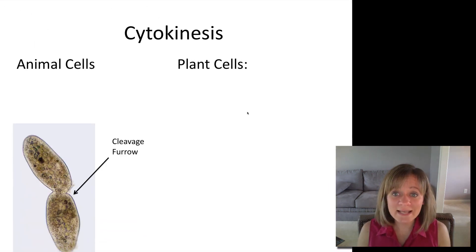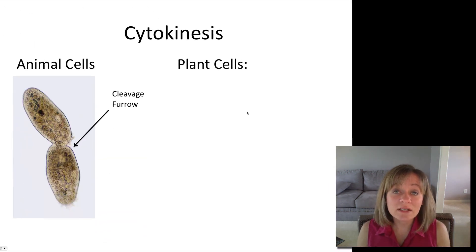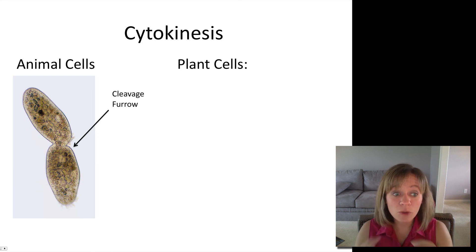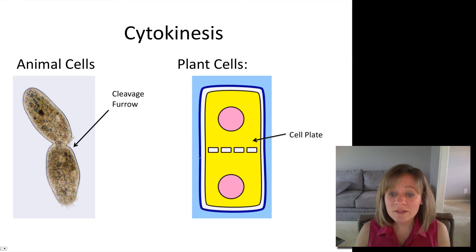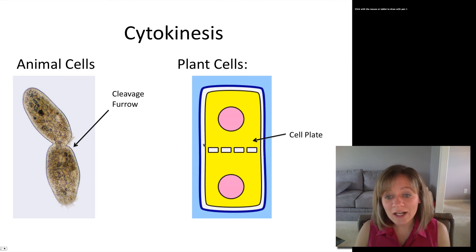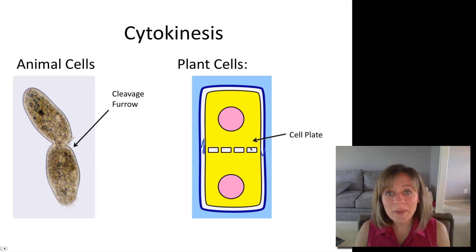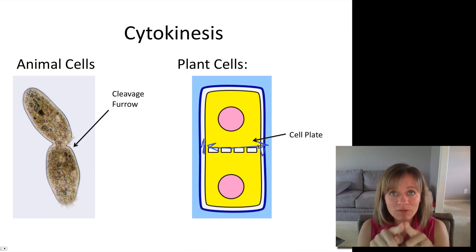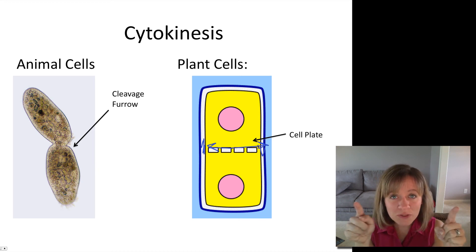In plant cells, cytokinesis is a little bit different. In animal cells we have the cleavage furrow pinching the cells apart. In plant cells, however, we have something called a cell plate, which is actually derived from the cell wall. So instead of pinching in, it grows outward — it starts in the inside and grows outward until it divides the cell into two.